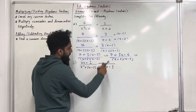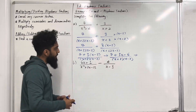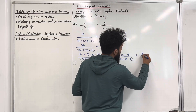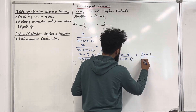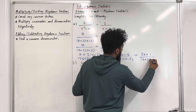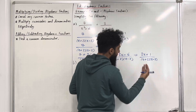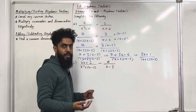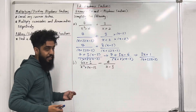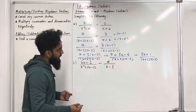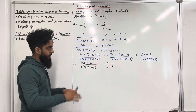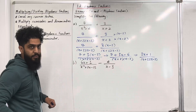So 7 minus 6 is positive 1. The final answer is 3x plus 1 over x plus 2 times x minus 2. This is the simplest form — you cannot cancel out further factors because if you look at the numerator and denominator, there are no common factors. So that is the final answer.